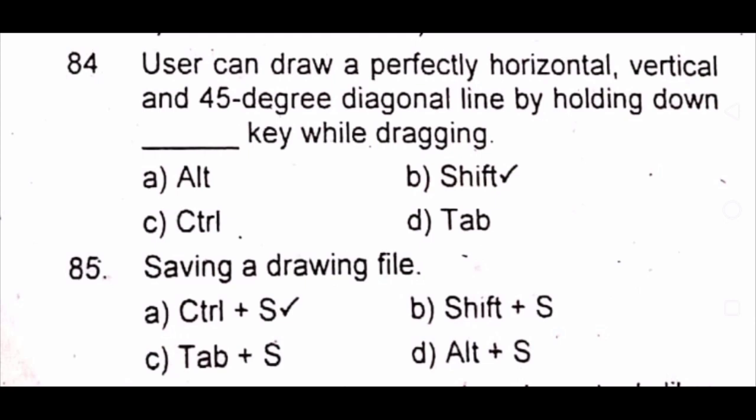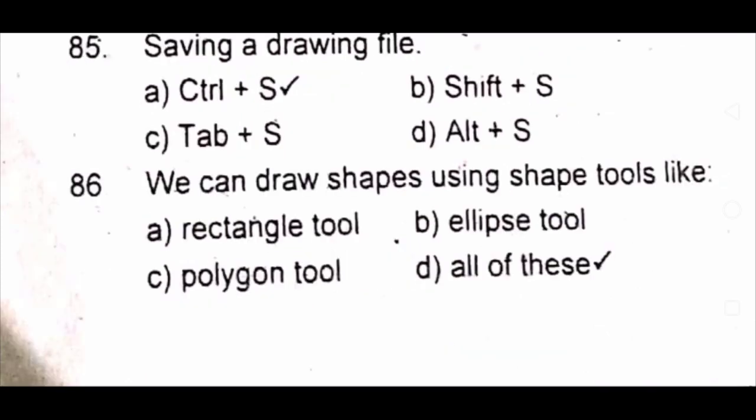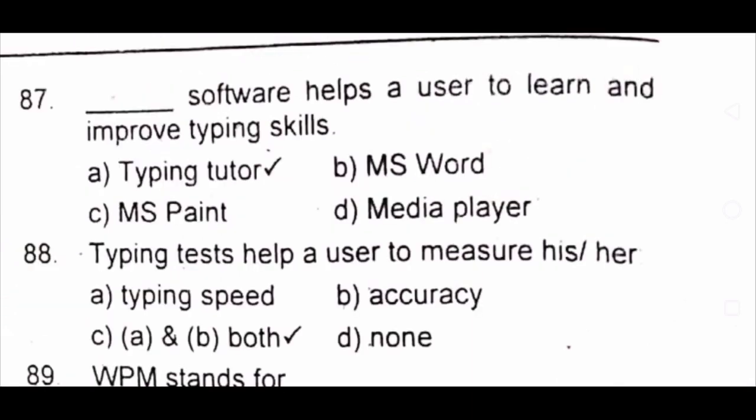Question 86: We can draw shapes using shape tools like A) rectangle tool B) ellipse tool C) polygon tool D) all of these. The answer is D) all of these. Question 87: Dash software helps a user to learn and improve typing skills. A) typing tutor B) MS Word C) MS Paint D) media player. The answer is A) typing tutor.